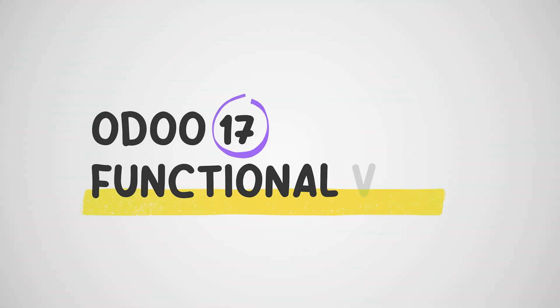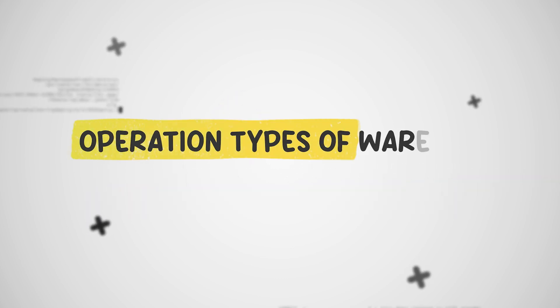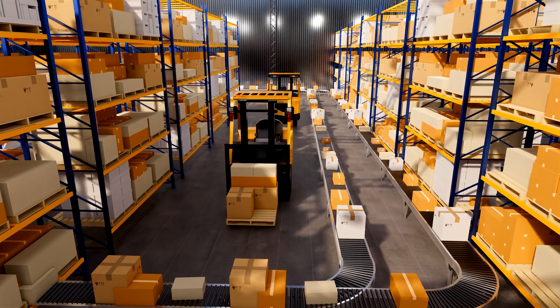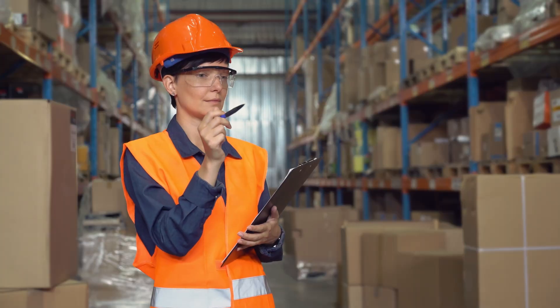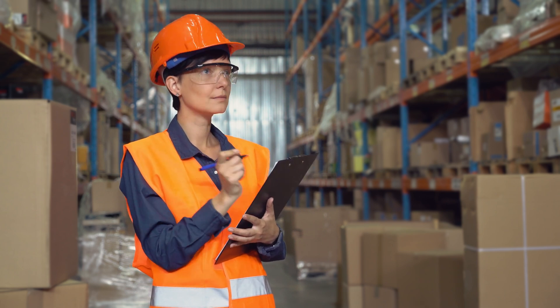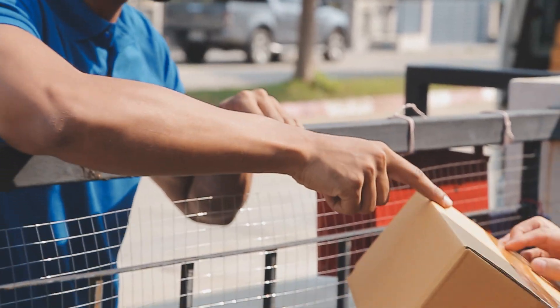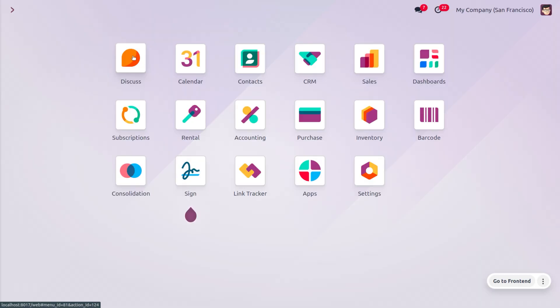Hey everyone, welcome back to Sai Roses. In today's video, we will be discussing the operation types of warehouses in Odoo 17. Warehouse operations are the behind-the-scenes activities that keep the business running smoothly. They encompass everything from receiving and storing goods to picking, packing, and shipping them out to customers, creating efficient warehouse operations essential for meeting customer demand and reducing costs.